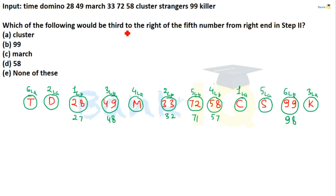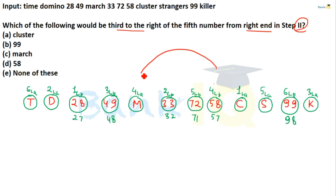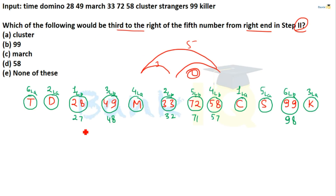Next question: Which of the following would be the 3rd to the right of the 5th from the right end in step number 2? In step 2, the 5th from the right end, then moving 3 places to the right — that means we need to identify the 2nd element from the right end of step 2.